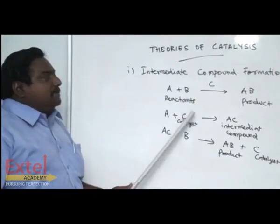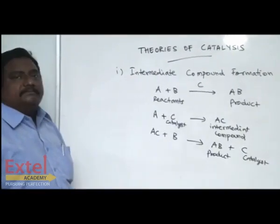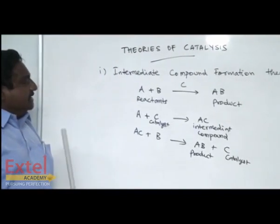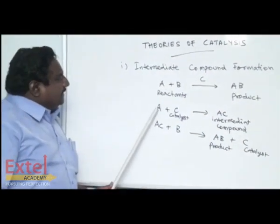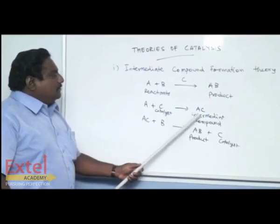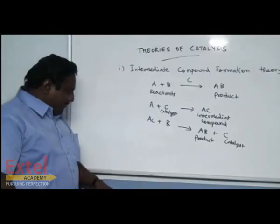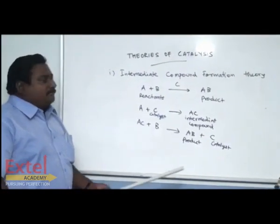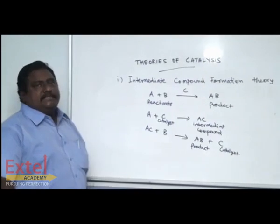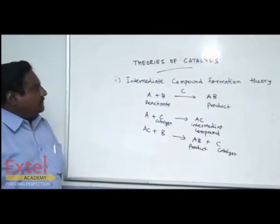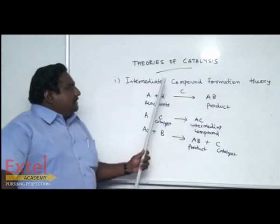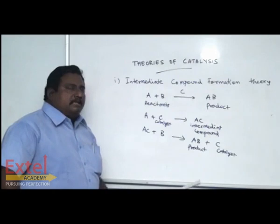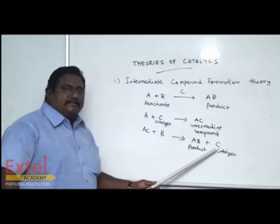A and B are reactants. They form the product AB in the presence of catalyst C. In this reaction, one of the reactants combines with the catalyst to form an intermediate compound. This intermediate compound then combines with B to form product AB and the catalyst C is regenerated. This theory explains why the catalyst is regenerated at the end.